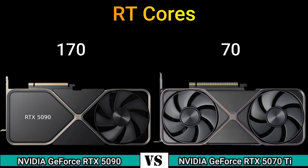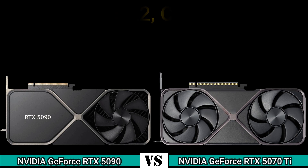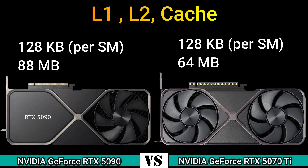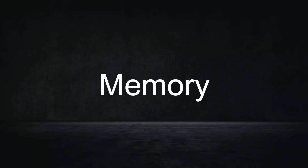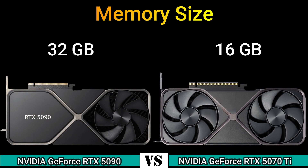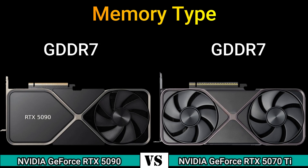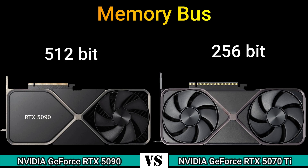RT cores: 170 and 70. L2 cache: 128 KB per SM, 64 MB total. Memory size: 32 GB and 16 GB. Memory type: GDDR7. Memory bus: 512-bit and 256-bit.